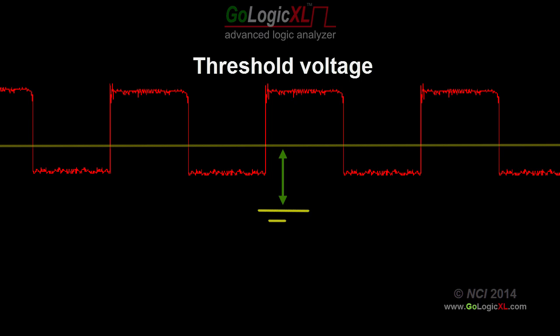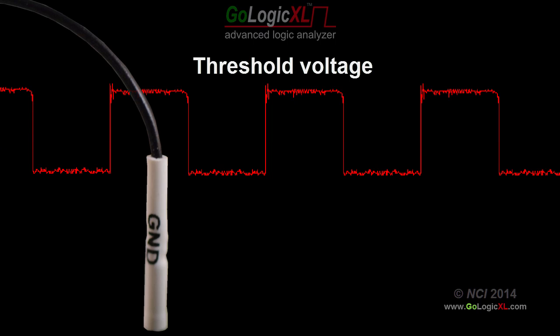Since the circuit ground is a reference for the threshold voltage, good data probably can't be captured if the ground channels are unconnected or loose. So don't forget to connect at least one ground channel.